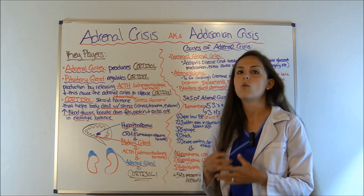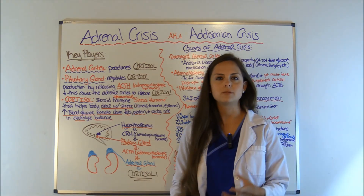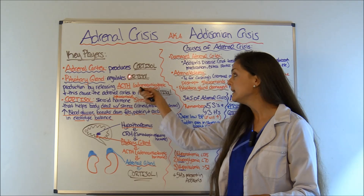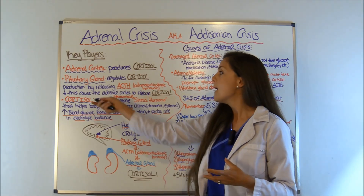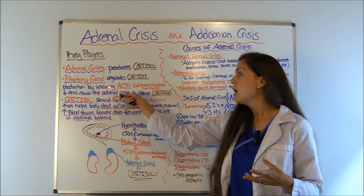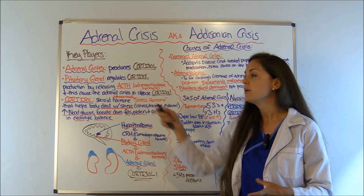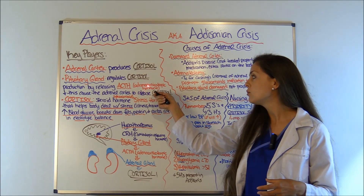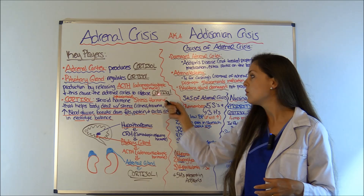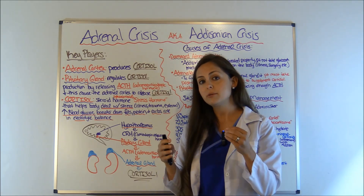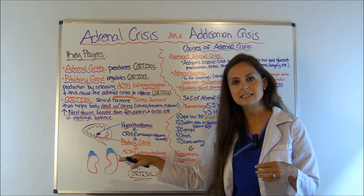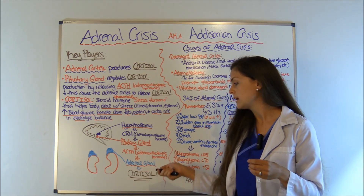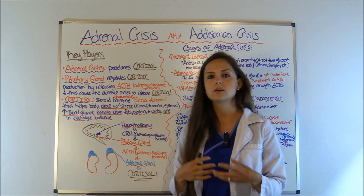Next, your pituitary gland — it plays a role in cortisol. It regulates cortisol production by releasing the hormone ACTH, which is short for adrenocorticotropic hormone. Whenever the pituitary gland releases ACTH, it causes the adrenal glands to release cortisol.